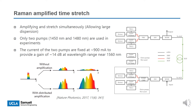During time-stretch, the pulse is stretched, thus the peak power goes down, and the SNR also becomes smaller as shown in the upper arm of the left figure. Amplified time-stretch is proposed to address this problem — it can stretch and amplify the pulse simultaneously as shown in the lower arm of the left figure. With amplified time-stretch, large dispersion can be used to achieve both high SNR and high spectral resolution. Here, we choose Raman amplified time-stretch, and the setup is shown on the right.